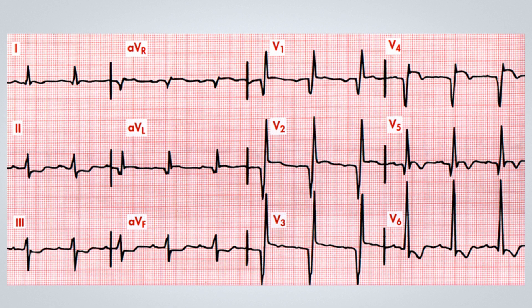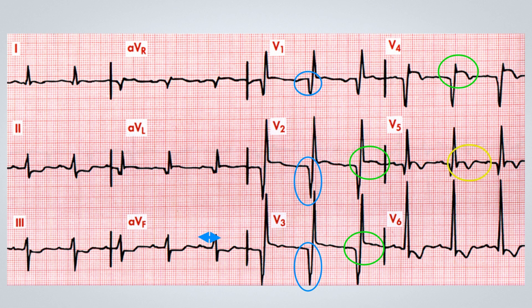In the electrocardiogram we are analyzing, we can see the patient maintains a sinus rhythm with a first-degree atrioventricular block, meaning a PR interval above 200 milliseconds. Examining the QRS complexes, we observe a QS wave from V1 to V3, lasting more than 40 milliseconds, suggesting necrosis in the anteroseptal region. There is also a change in ventricular repolarization, with ST segment elevation from V2 to V4 and inverted T waves in V5, V6, and other leads.